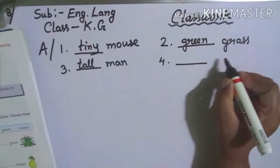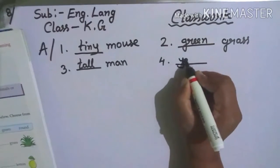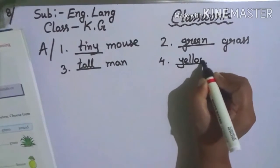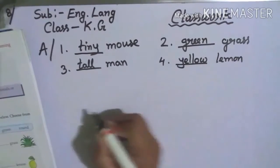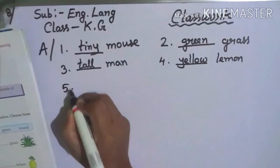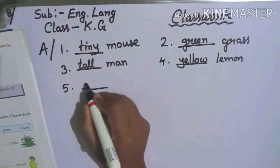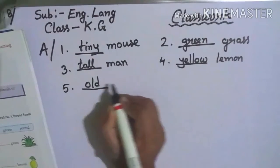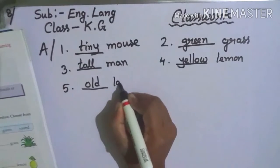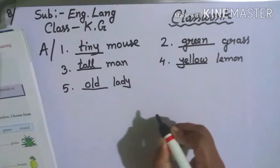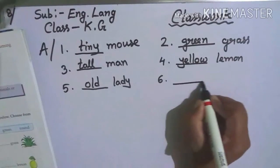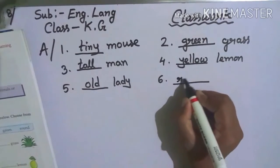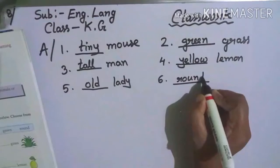Number four: yellow, Y-E-L-L-O-W lemon. Number five: old lady. Six: round table.